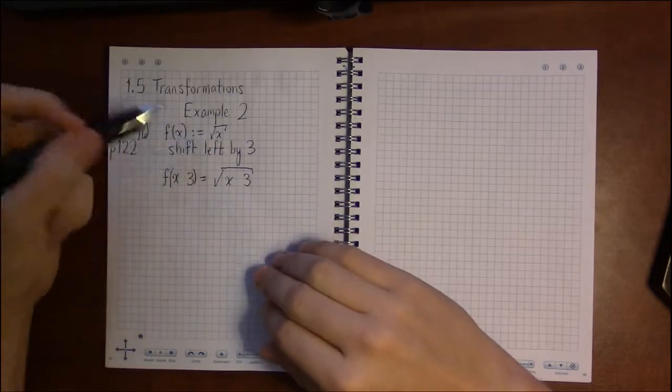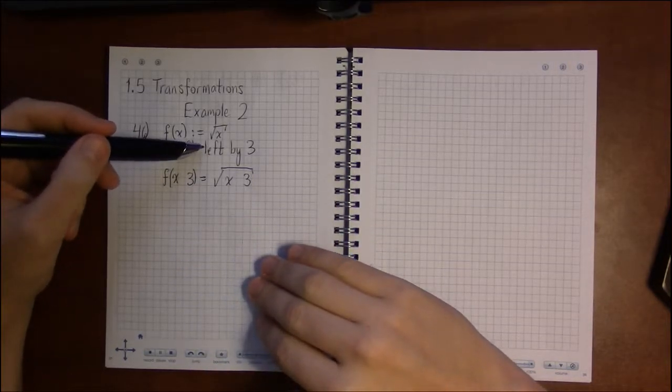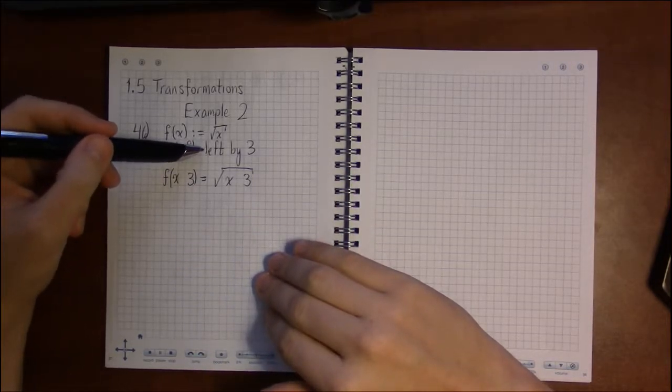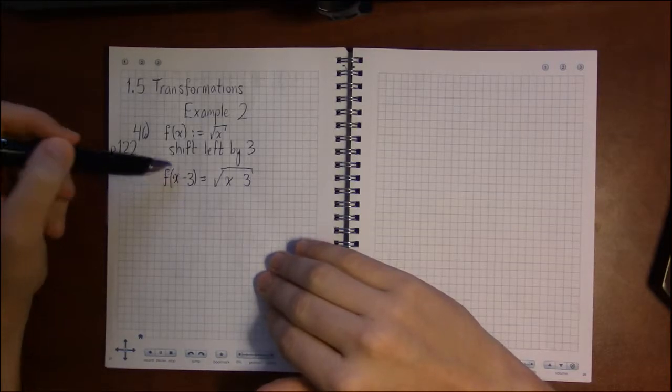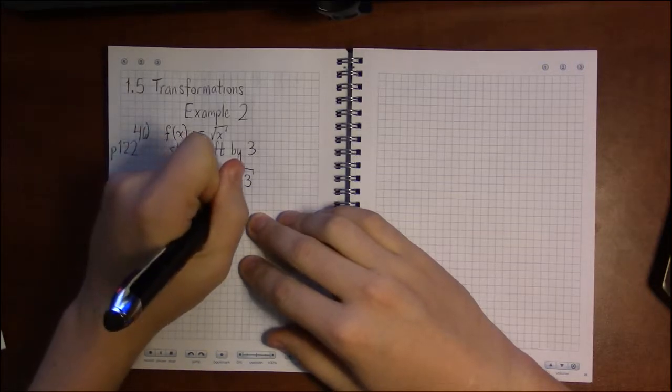Now since it's horizontal, the transformation is exactly the opposite of what you'd think. So I would think that left would mean negative. So that means since it's horizontal, left is actually plus.